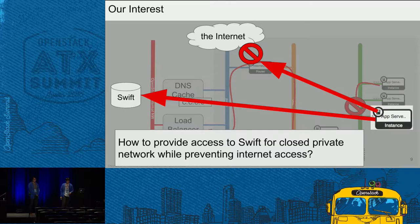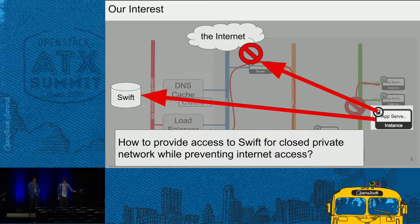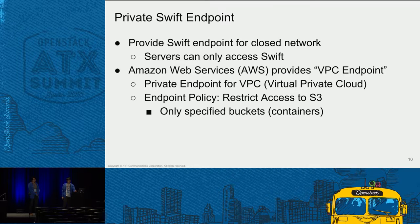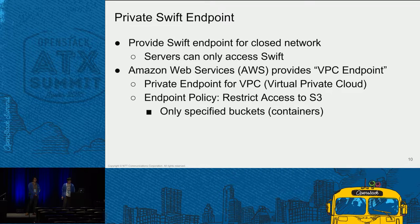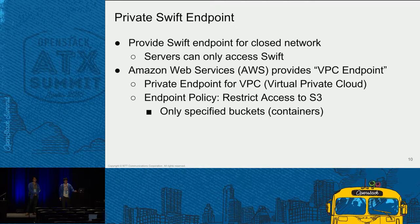So our interest is how to provide access to Swift for servers connected to a closed private network while preventing internet access. To achieve this, we tried to provide users a private Swift endpoint. A private Swift endpoint enables servers which have no internet access to use Swift. We refer to the similar solution in Amazon Web Services, called VPC endpoint.